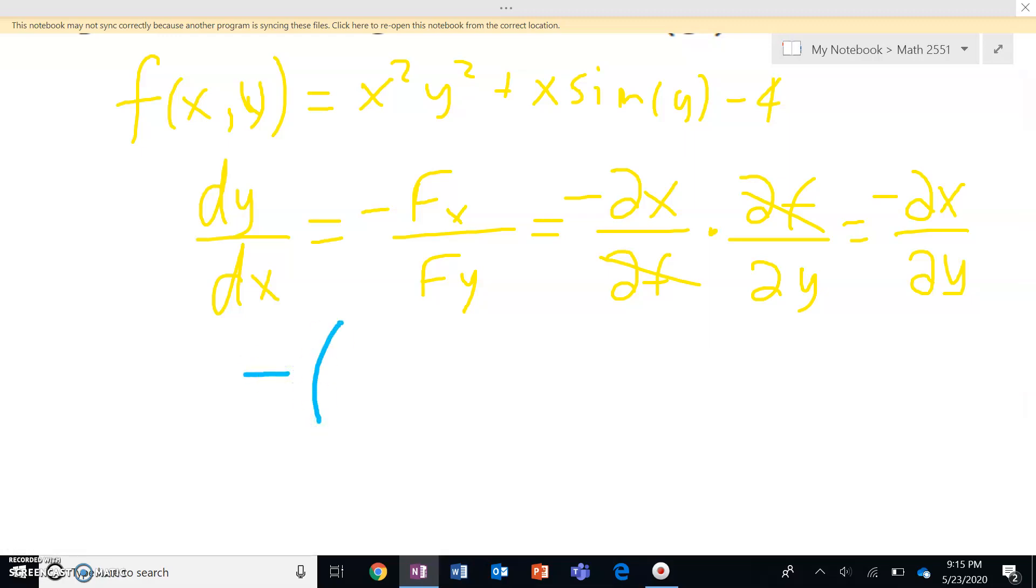I'm just going to slap a negative sign outside and take the partial derivative of the function with respect to x first. Now, while I take the partial derivative with respect to x, y gets held constant, so that's just 2xy squared plus sine of y.